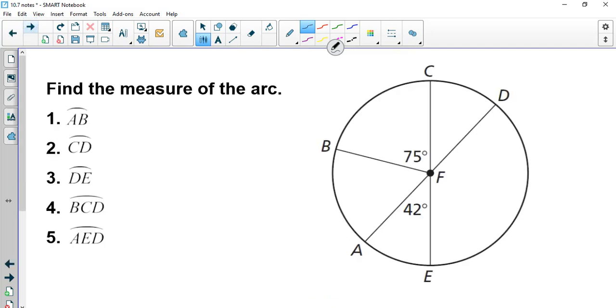Alright, find the measure of AB. We don't have a number there, but we see that CF is to the center, it's a diameter. So CBE is a semicircle, which means 180 degrees. So if we take 180 minus 75 minus 42, we get 63 right here. So AB is 63 degrees.